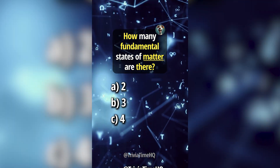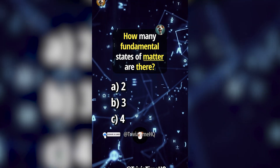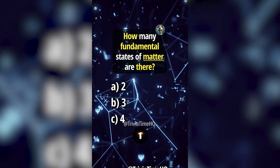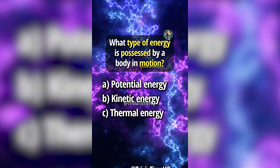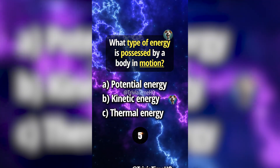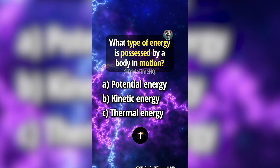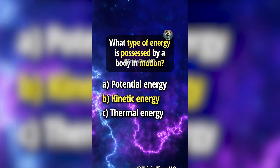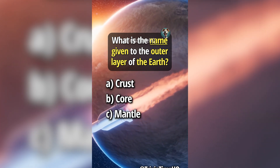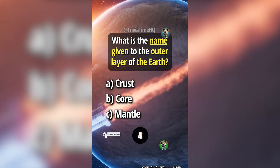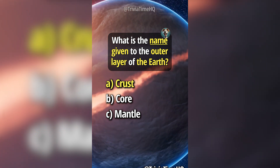How many fundamental states of matter are there? Answer C, four. What type of energy is possessed by a body in motion? Answer B, kinetic energy. What is the name given to the outer layer of the earth? Answer A, crust.